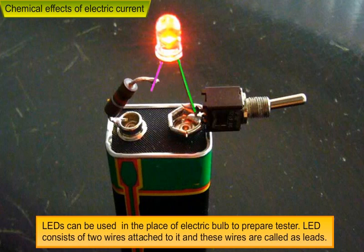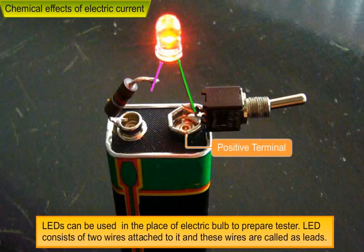While connecting an LED to a circuit, the longer lead is always connected to the positive terminal of the battery and the shorter lead is connected to the negative terminal of the battery.